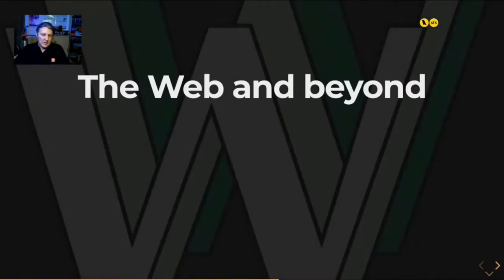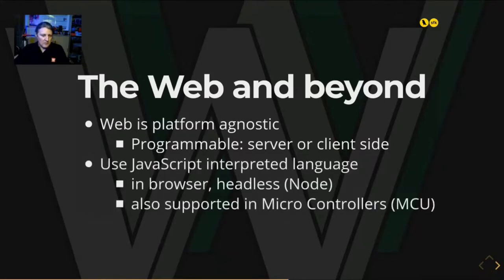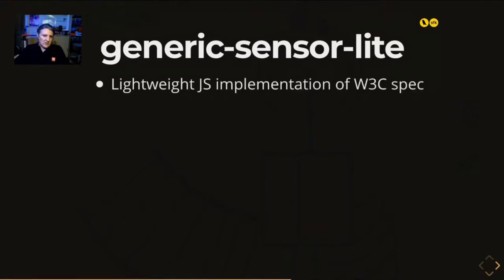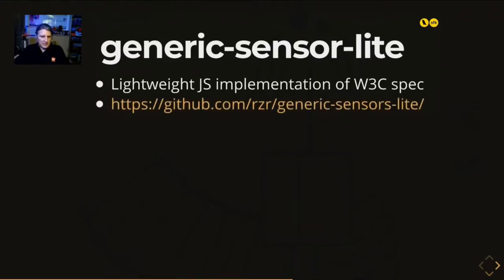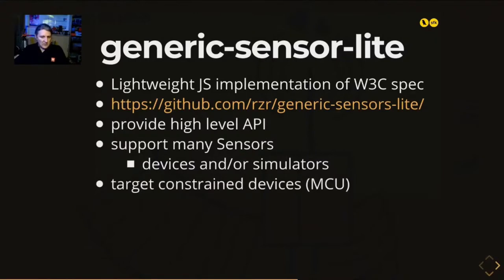The web can be inspiring beyond what is used today. It's platform-agnostic, programmable on server or client side. JavaScript is an interpreted language running in the browser, on the server side, or in headless applications. JavaScript can also run on microcontrollers since it's not too complex and can fit in constrained memory. So I made the generic-sensor-lite module — a JavaScript implementation of the W3C Generic Sensor specification, open source. It provides a high-level API supporting many sensors, simulators if not yet implemented, and targets constrained devices like microcontrollers.